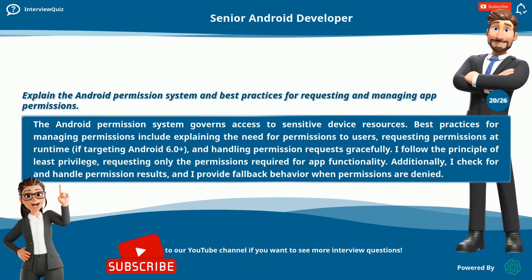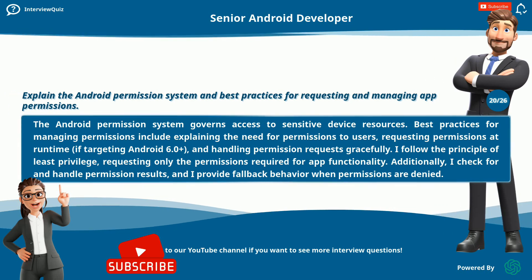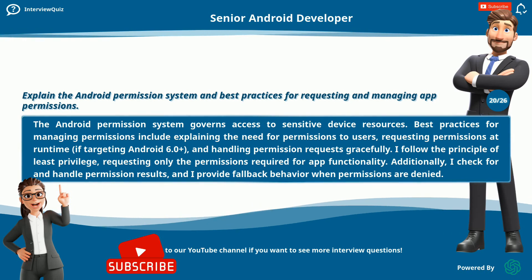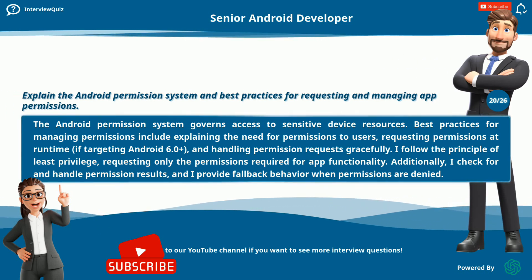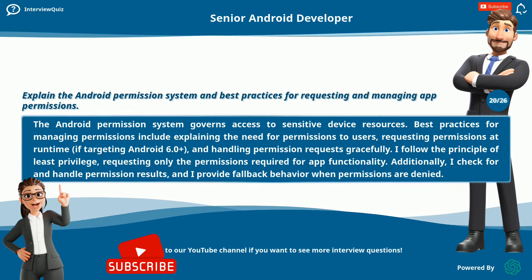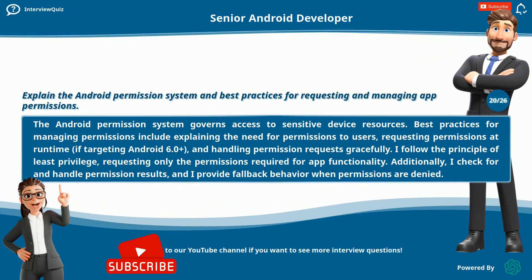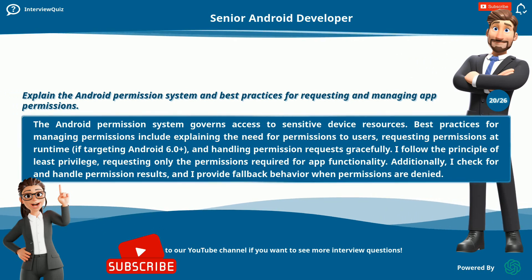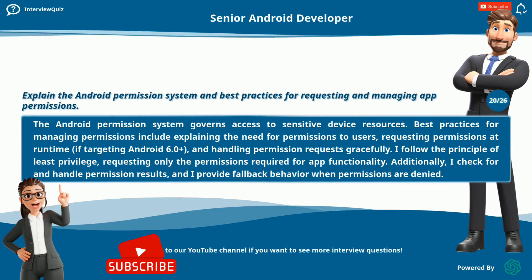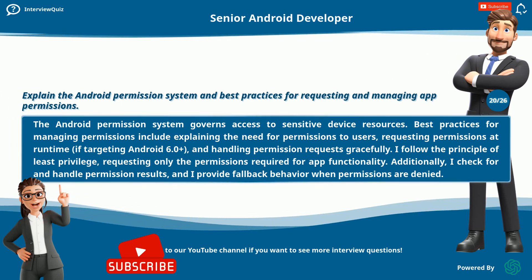Explain the Android permission system and best practices for requesting and managing app permissions. The Android permission system governs access to sensitive device resources. Best practices for managing permissions include explaining the need for permissions to users, requesting permissions at runtime if targeting Android 6.0+, and handling permission requests gracefully. I follow the principle of least privilege, requesting only the permissions required for app functionality. Additionally, I check for and handle permission results, and provide fallback behavior when permissions are denied.